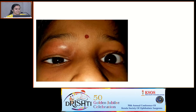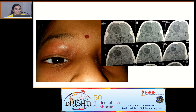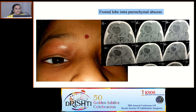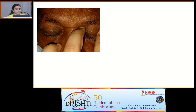This is a case of a seven-year-old child with upper lid swelling and minimal limitation of elevation. Imaging was done and it turned out to be a frontal lobe intraparenchymal abscess. The child was immediately referred to a neurosurgeon.